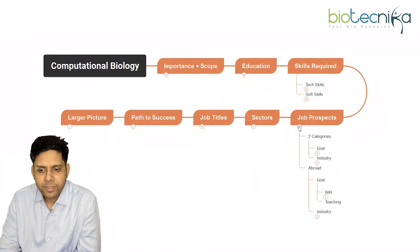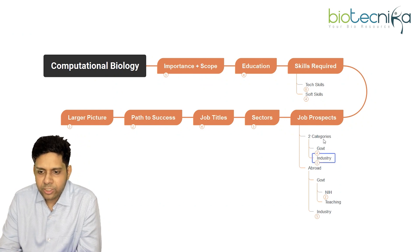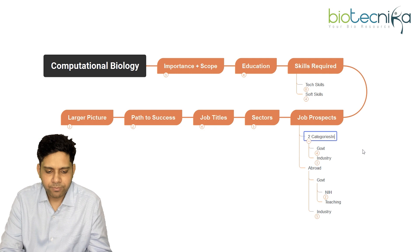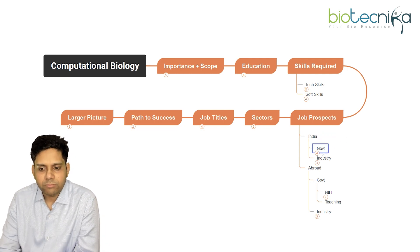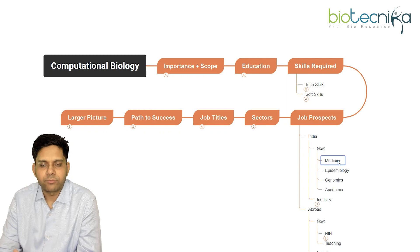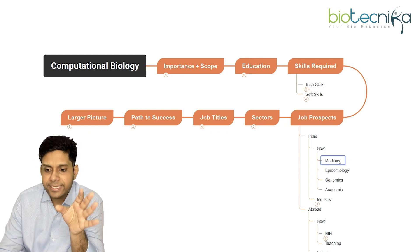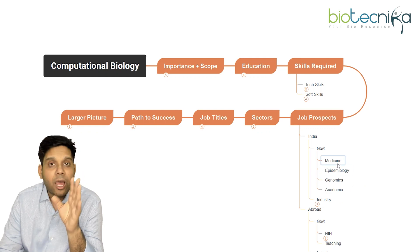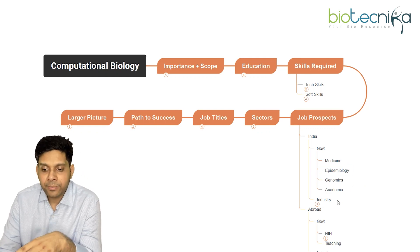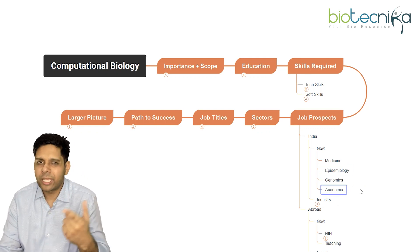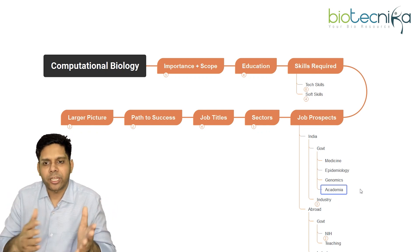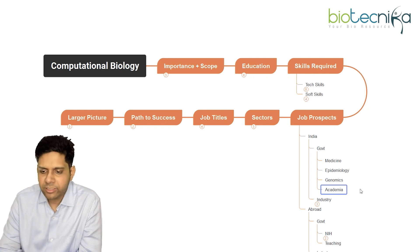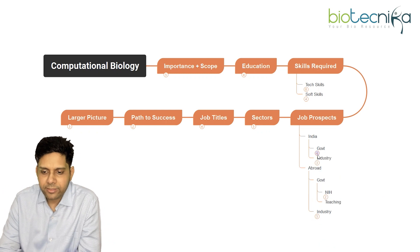Dividing into two categories — government and industry, specifically for India. Under government, a lot of research is happening under CSIR in medicine, epidemiology, and genomics in CSIR labs. In academics, once you're CSIR qualified, you can get in as a computational biology professor or assistant professor.